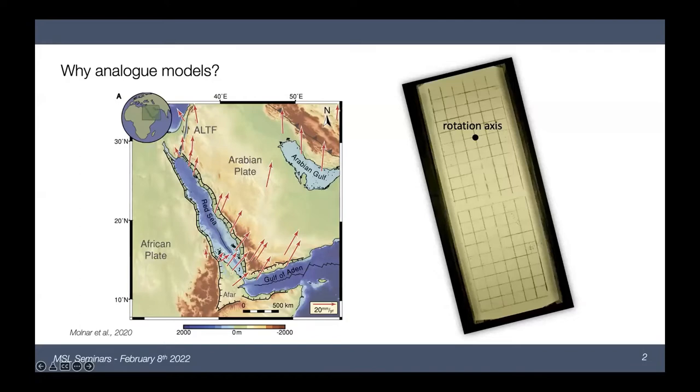So before we start, we can first ask, why would we even need analog models or models per se? And if we look at the map on the left side, we see the Red Sea and the opening of the Red Sea. And if you see these red arrows, we see that the maximum velocities there are about 20 millimeters per year.